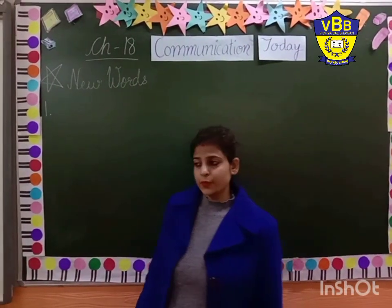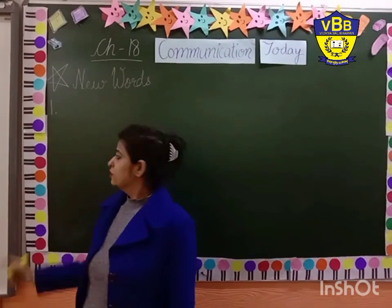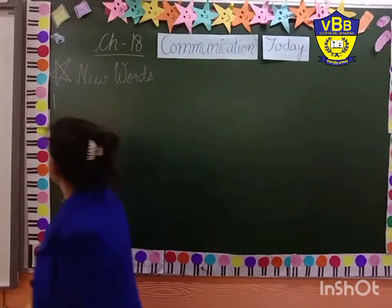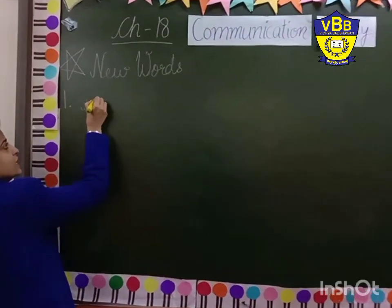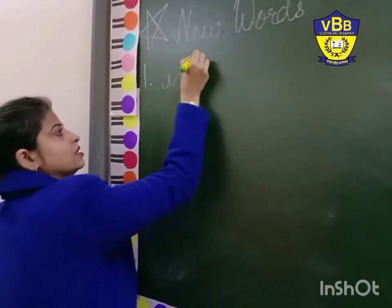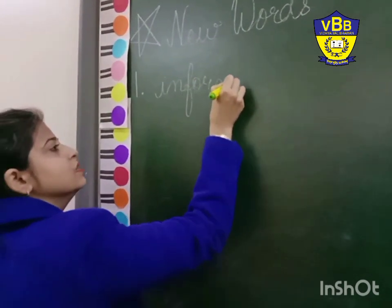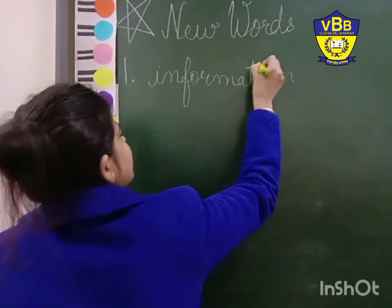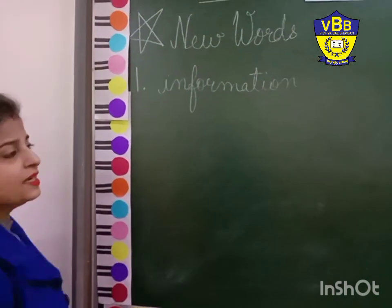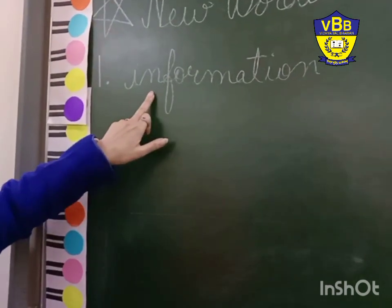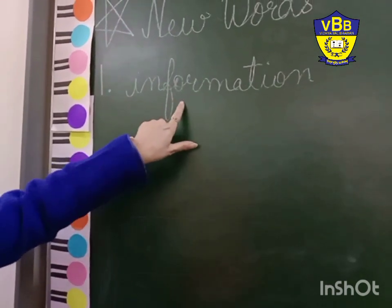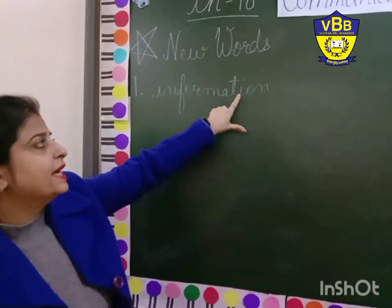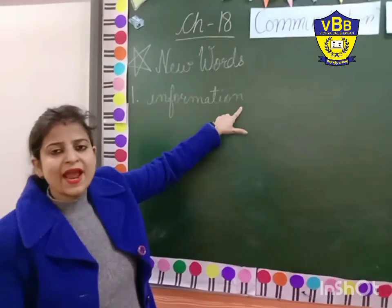From the very first line, the first word is information. Write with me — information. I-N-F-O-R-M-A-T-I-O-N. The first letter should be small. Information.